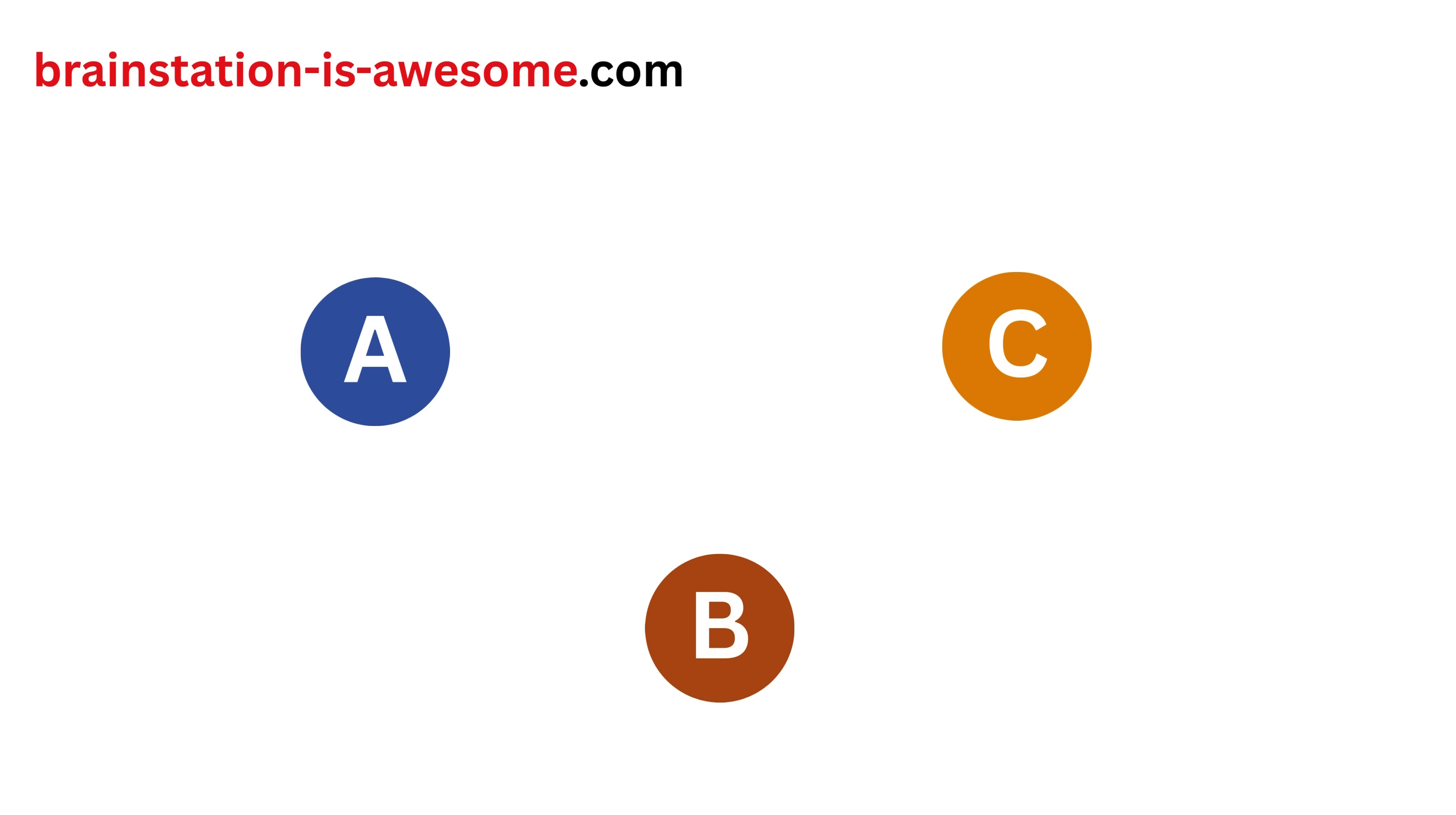On any given visit, a user is on one of these three pages. But which page they visit next depends only on where they are right now, not on where they have been before. In other words, if we know which page they are on right now, we can predict the likelihood of where they will go next.